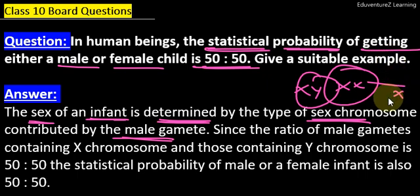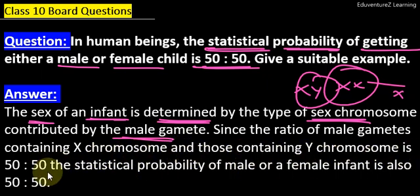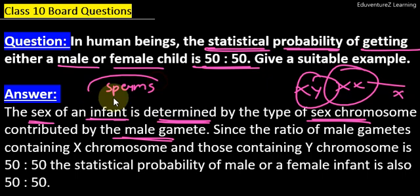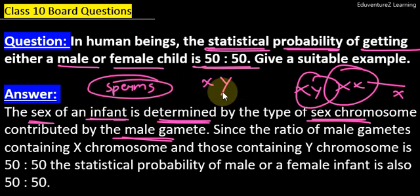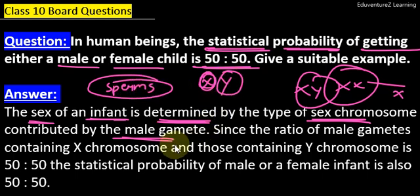The ratio of male gametes containing X chromosome and those containing Y chromosome is 50-50, because 50% of the sperm carry an X chromosome and 50% carry a Y chromosome.